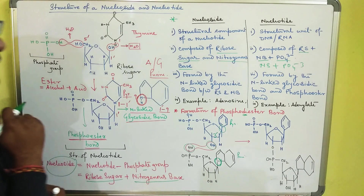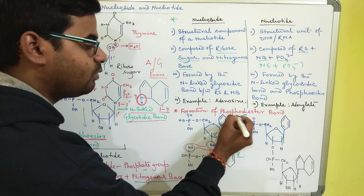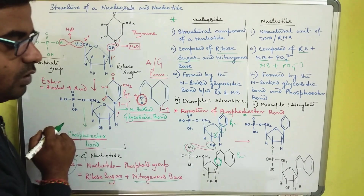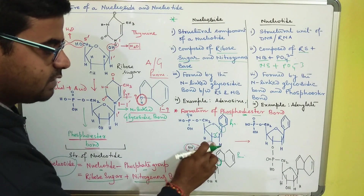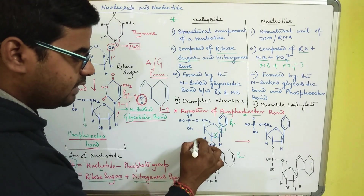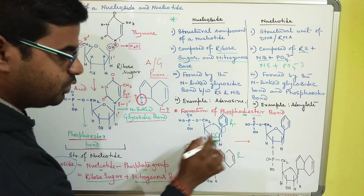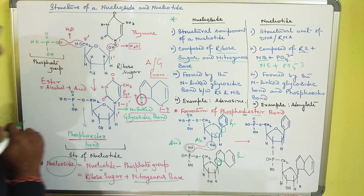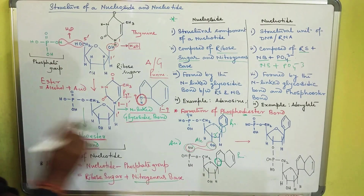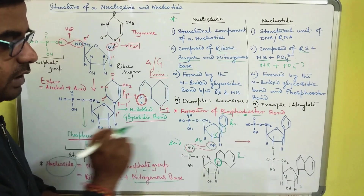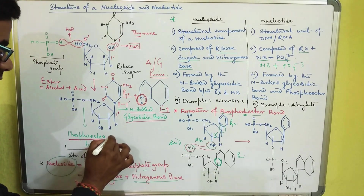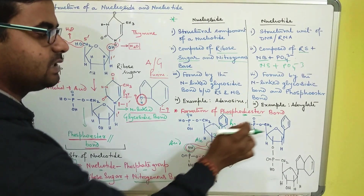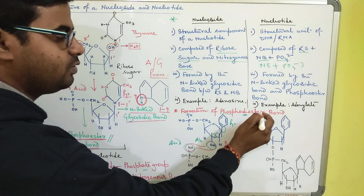This bond is again called a phosphoester bond, because phosphate is involved in its formation and the bond is formed between the alcoholic group of the ribose sugar and the acidic group of the phosphoric acid. So this is a phosphoester bond.